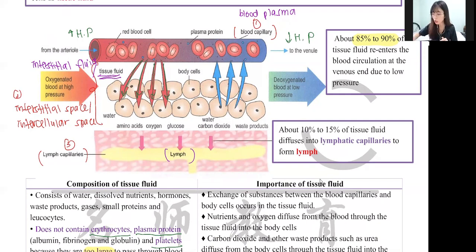85 to 90 percent returns to the bloodstream. That leaves 10 to 15 percent, which diffuses into the lymphatic capillary as lymph. So in the lymphatic capillary, only 10 to 15% of the fluid remains — the rest has already returned to the bloodstream.